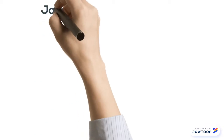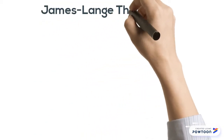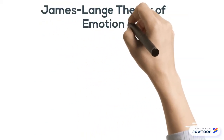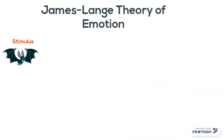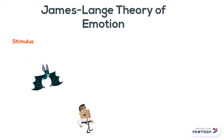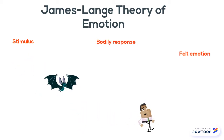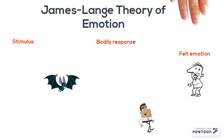One of the first biological theories of emotion was the James-Lange theory. This theory posited that an exciting stimulus activates a bodily response, which then results in an emotion.